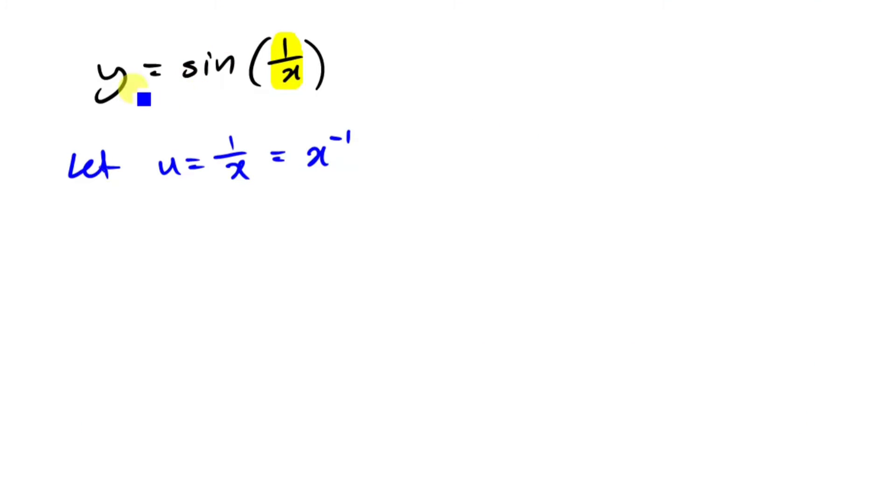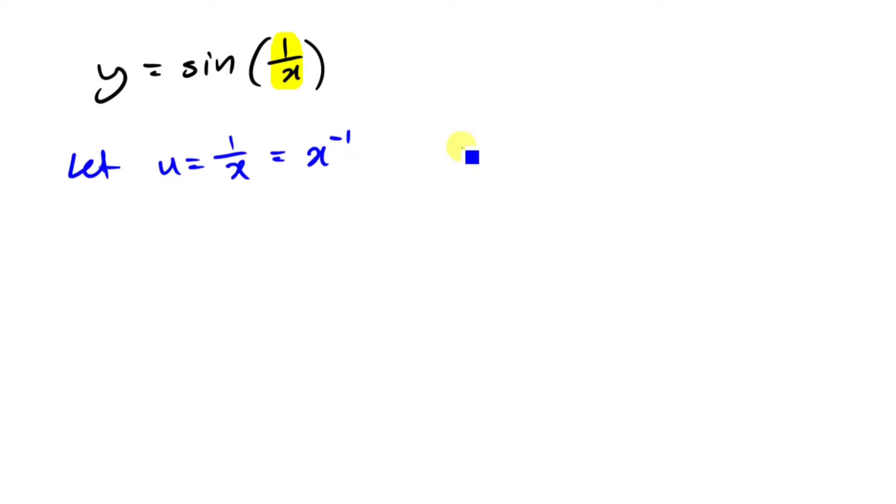And now because we let this term be u, we can update the y equation as this. We can say now we've got y equals sine u. So it's always important to write that second bit down as well.